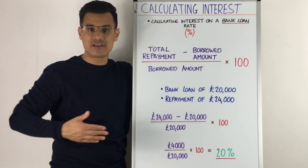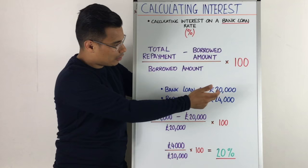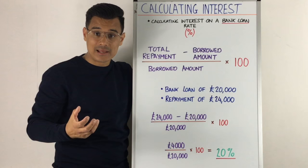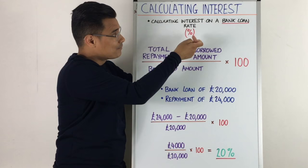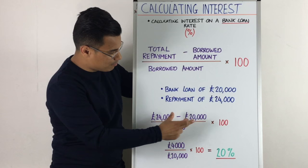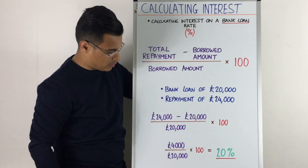You may see a question like: you've taken out a bank loan of £20,000 and the total repayment for that bank loan is £24,000. So you've borrowed £20,000 and need to pay back £24,000. You need to work out the interest rate expressed as a percentage. You'd punch those numbers into the formula — put the total repayment £24,000, then minus off the bank loan of £20,000, all divided by that same £20,000, times by 100.